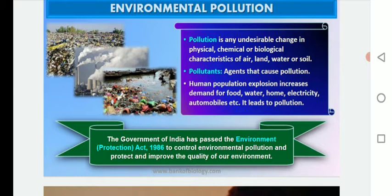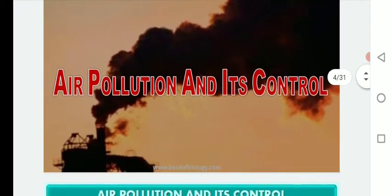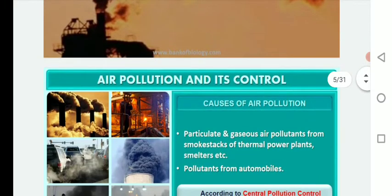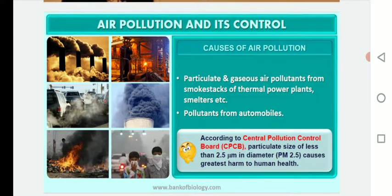Human population explosion increases demand for food, water, homes, electricity, automobiles, etc., and all these things lead to pollution. The Government of India passed the Environment Protection Act in 1986 to control environmental pollution and protect and improve the quality of our environment. First we will see air pollution and its control — what are the causes of air pollution?